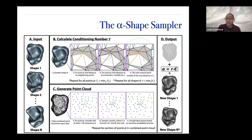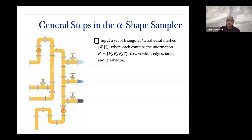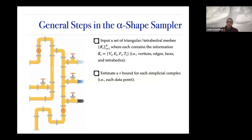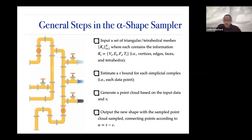This is almost like a rejection sampler or Metropolis-Hastings for generating new shapes. We do this for a bunch of different points in a joint point cloud — projecting all shapes onto a similar point cloud space — and from this joint point cloud we sample to generate new shapes. The alpha shape sampler has a few general steps: input a set of triangular or tetrahedral meshes — a collection of vertices, edges, faces, and tetrahedra — estimate a tau bound for each data point, generate a point cloud based on all these inputs and taus, and output new shapes from the sampled point cloud connecting points according to some output alpha parameter.